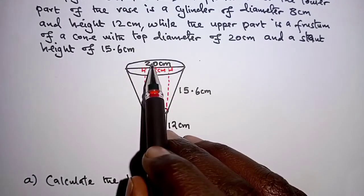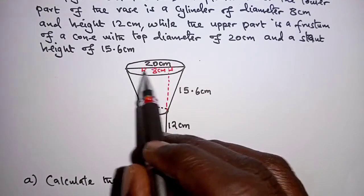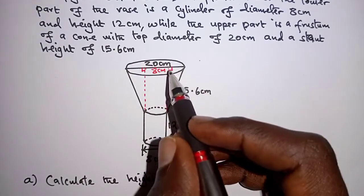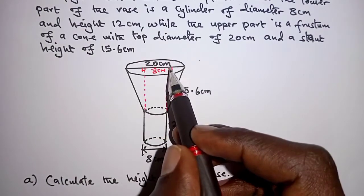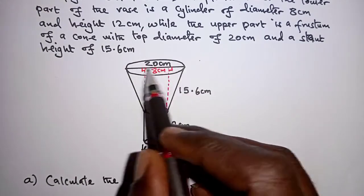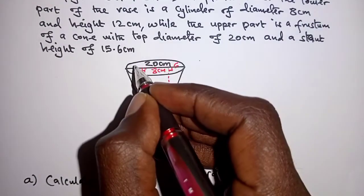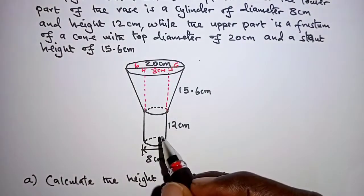if the whole of this length is 20 cm, then subtracting 8 cm will be left with 12 cm, which is shared by these two sides. So this side here should be 6 cm and here also 6 cm.